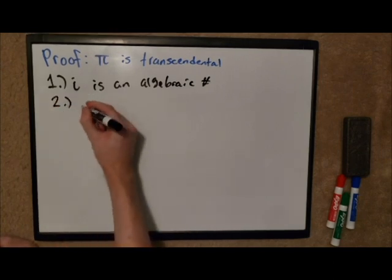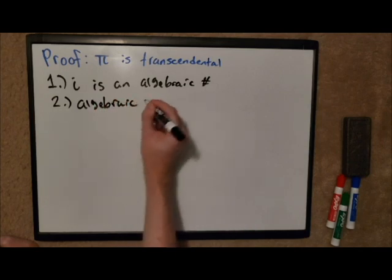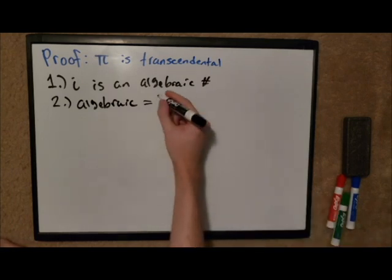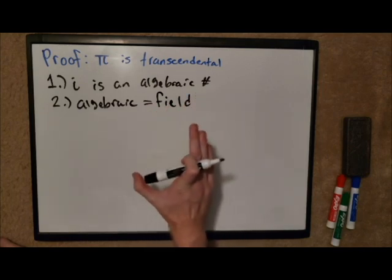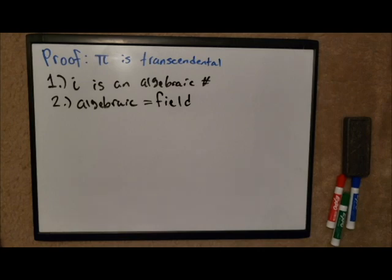The algebraic numbers form what the technical term for it is, what we call a field. This is basically a really fancy way of saying that you can take any two algebraic numbers and you can add, subtract, multiply, and divide those two numbers and the results will also be algebraic. This is going to be important.